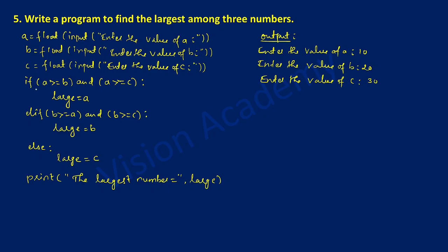After entering the values it checks the first condition: if a is greater than or equal to b. A is 10, b is 20 — so 10 is not greater than or equal to 20, that is false. With the AND operator, a is greater than or equal to c means 10 is not greater than or equal to 30 — also false. False AND false is false, so this statement will not get executed, and control transfers to the elif statement.